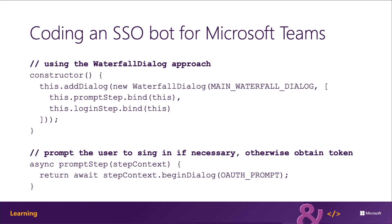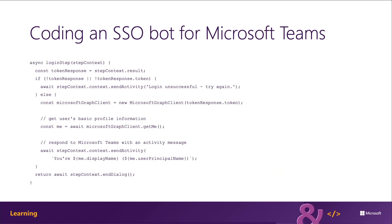Let's look at an example demonstrating a waterfall dialog. The first step prompts the user to authenticate using a prompt step. Next, the login step attempts to obtain an access token using the bot's authentication support. If successful, it uses the access token from the OAuth process to submit a request to Microsoft Graph and display the returned information. When you run the bot, the first time the user interacts with it, they're prompted to consent to a sign-in experience. Once they consent by selecting Continue, the bot displays information about the currently signed-in user — retrieved using the SSO support in Microsoft Teams to obtain the ID token, exchange it for an access token, and use that to submit requests to Microsoft Graph.